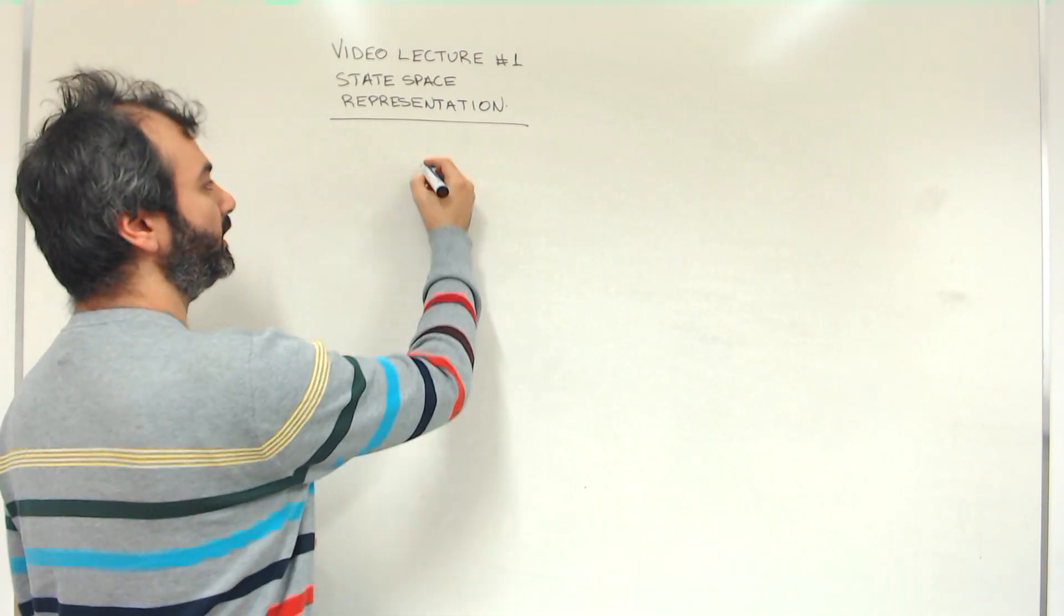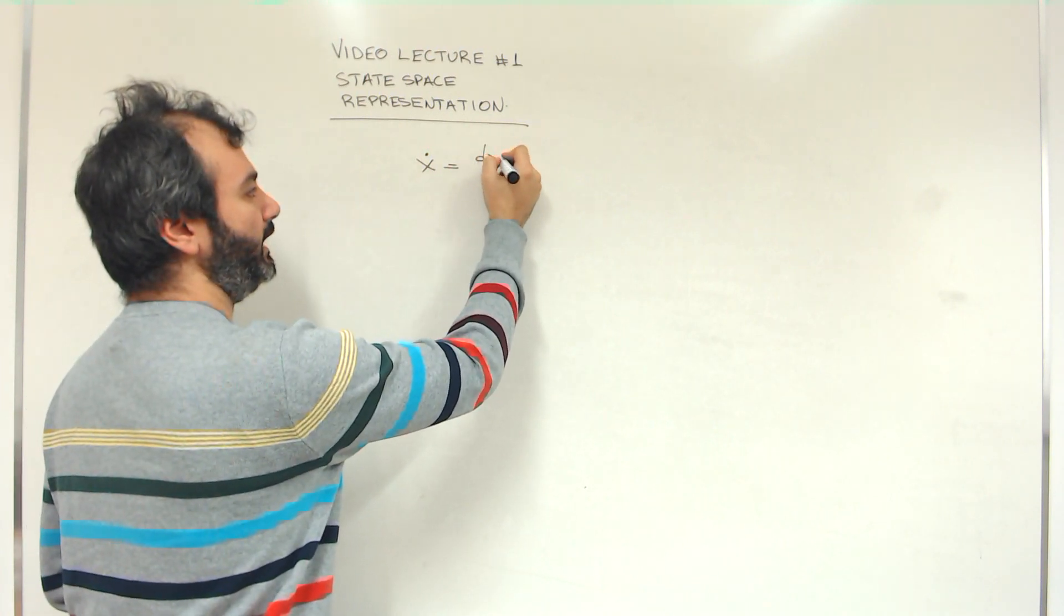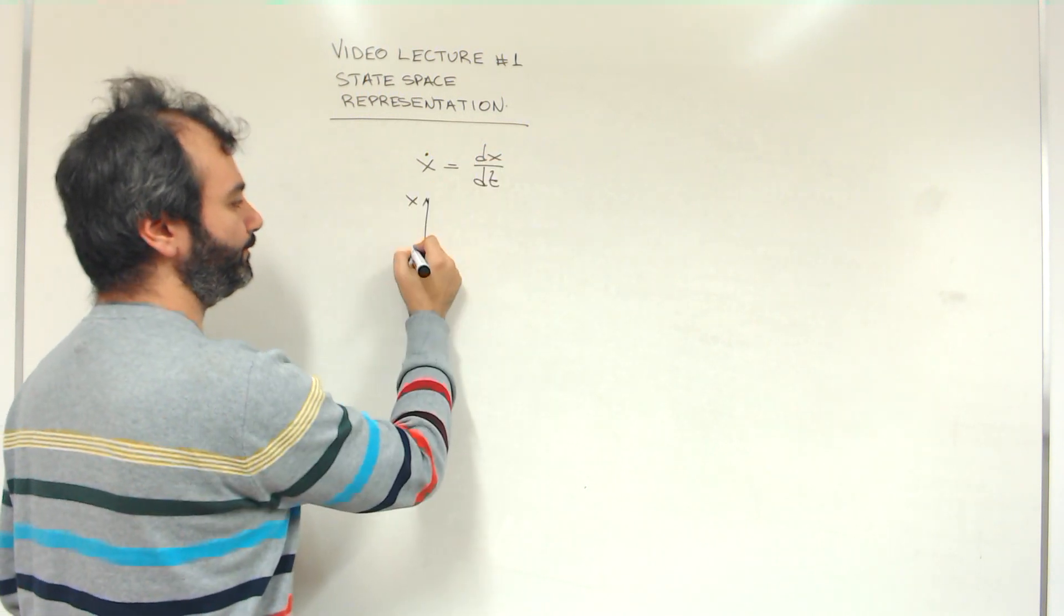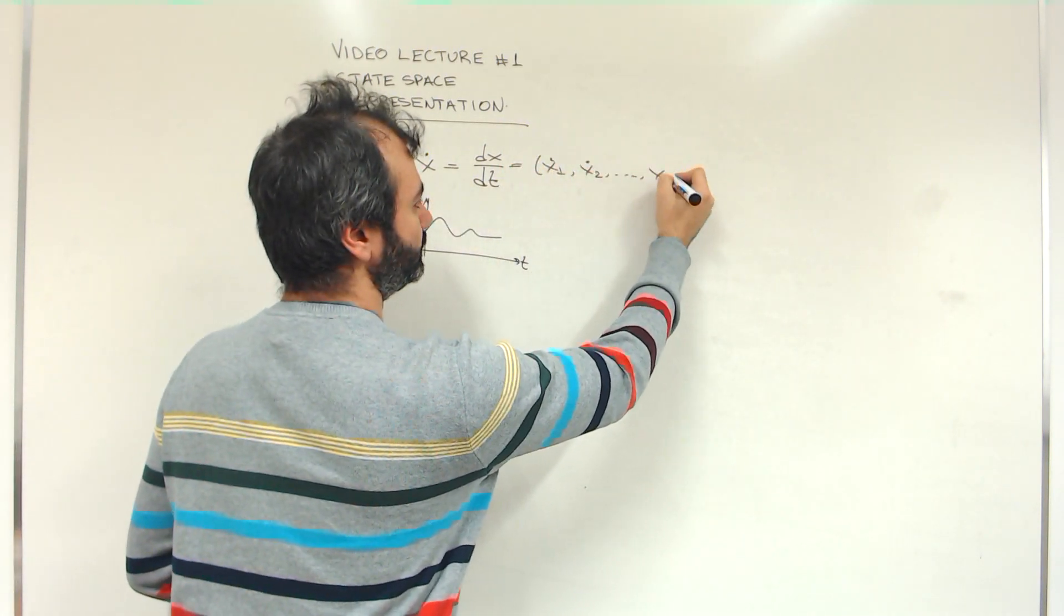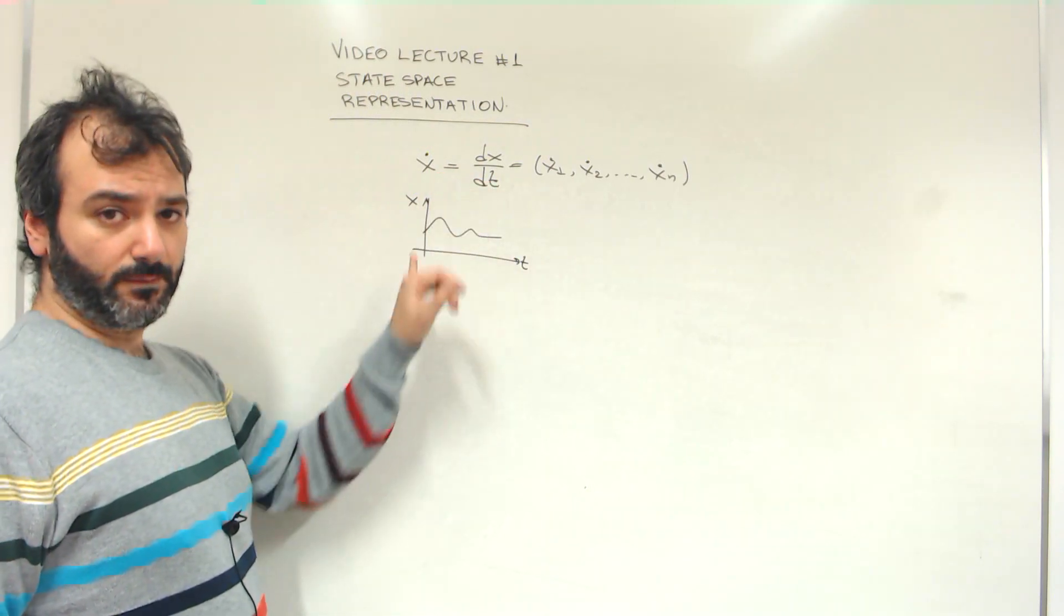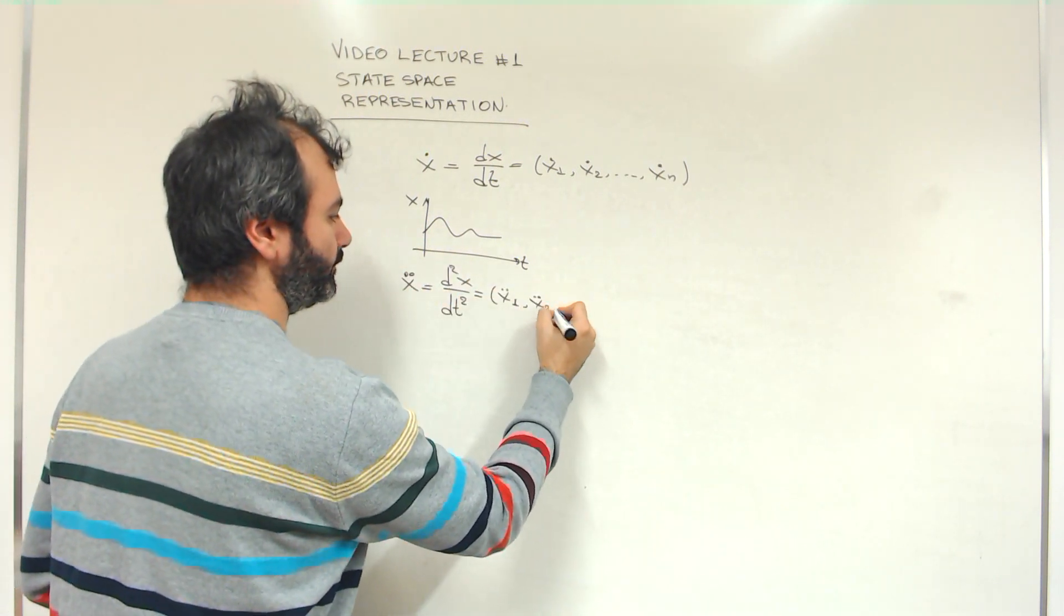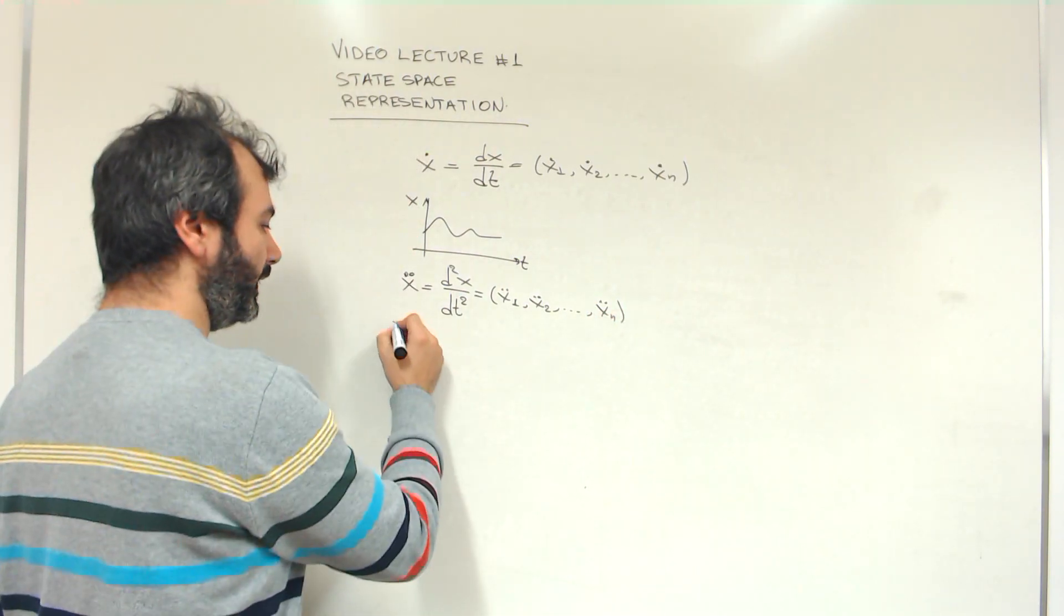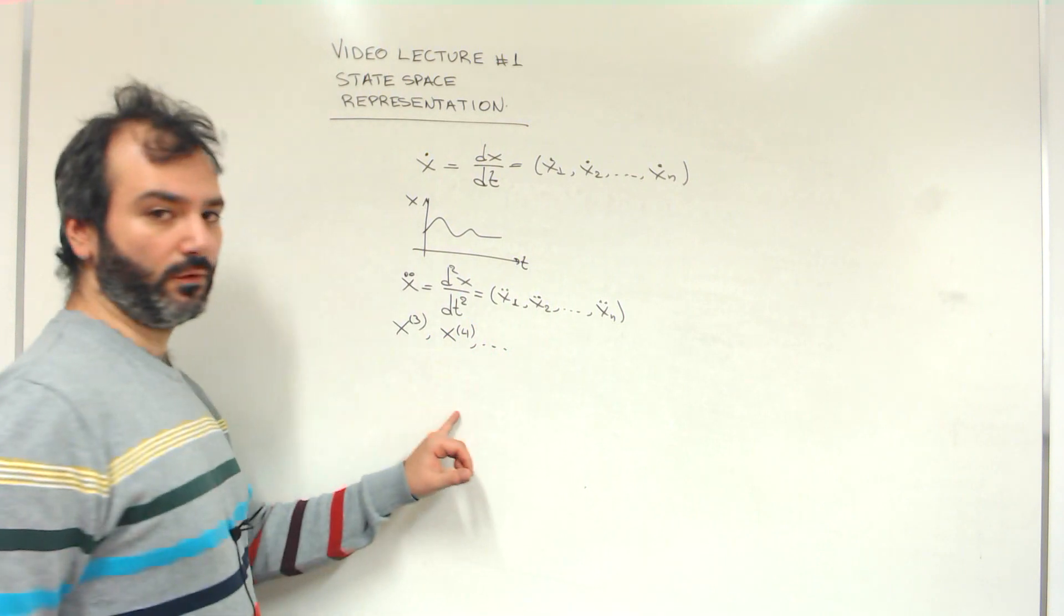We will denote the derivative of x by x dot. In other words, this is equal to dx over dt, the derivative of x with respect to time. x is a function of time. It can change, of course. Likewise, we will denote the second derivative of x by x double dot. The third, fourth, and so on derivatives are instead denoted by x superscript 3 in parentheses, x superscript 4 in parentheses, and so on and so forth.